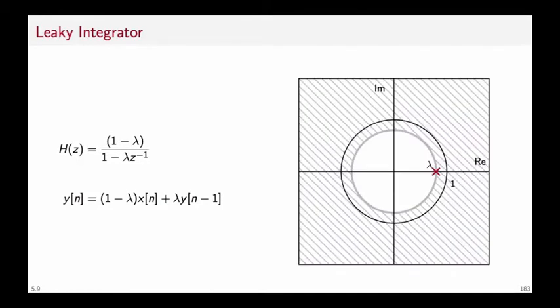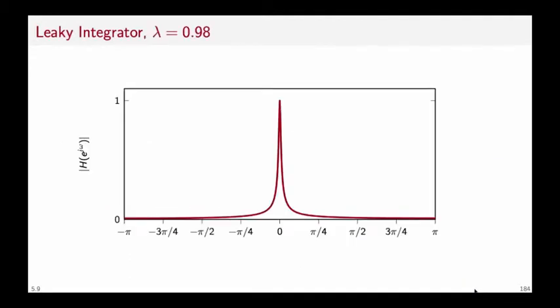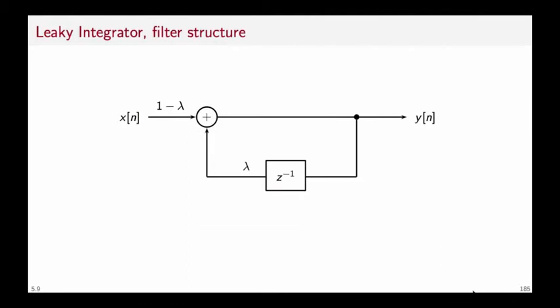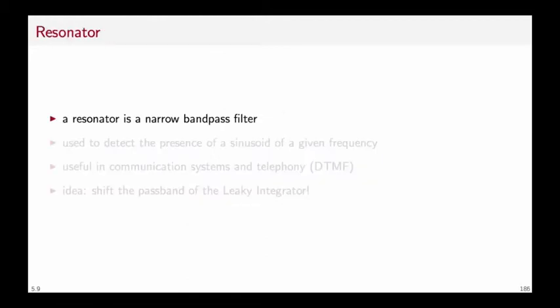We can plot the poles and the zeros of the leaky integrator on the complex plane and we find that there is only one pole in lambda, so when lambda is less than one the filter is stable. In the frequency domain the frequency response looks like this and it gets more and more concentrated around the origin as lambda gets closer to one. The block diagram for the filter is a simple feedback loop with a unit delay that pipes back the output into the input.